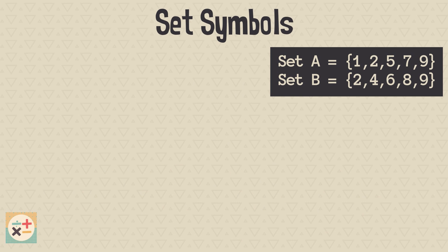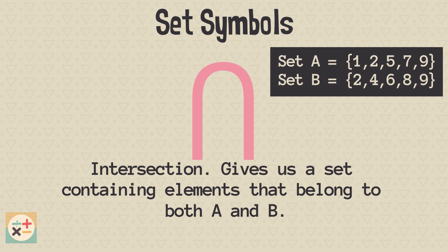On the other hand, this symbol indicates intersection. It gives us a set containing elements that belong to both A and B. In other words, the elements occur in both sets. In this example, the elements 2 and 9 occur in both sets, and therefore are an intersection of A and B.